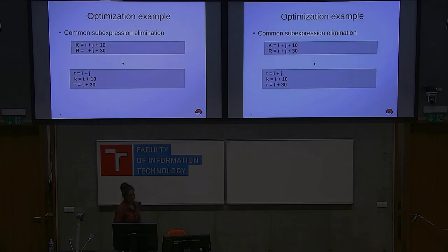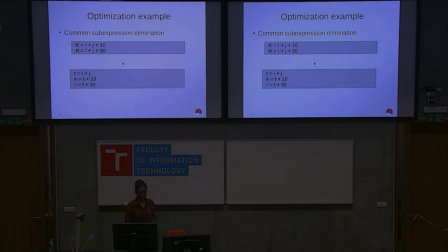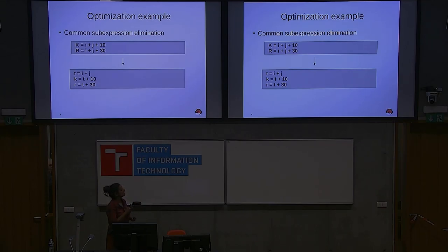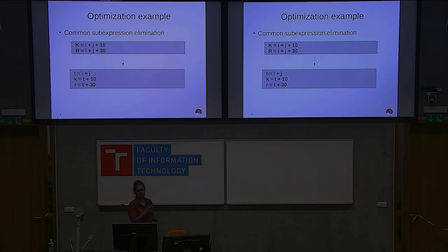Talking about the first level of optimization, the first example is common sub-expression elimination. We have two expressions, k and r. In both expressions, i plus j is common, and the values of i and j are not changing between the two expressions. So we can eliminate the redundancy — compute i plus j once, save it somewhere, and use it in both expressions. That way, you do the computation only once and not twice.